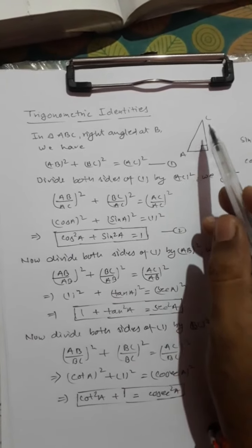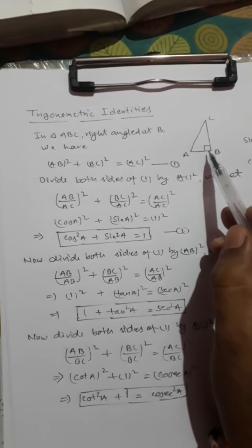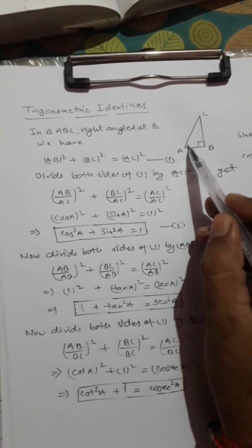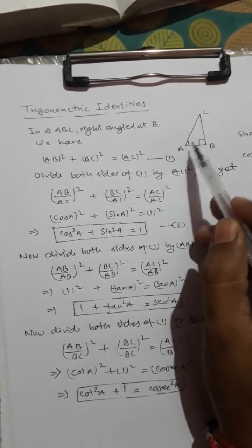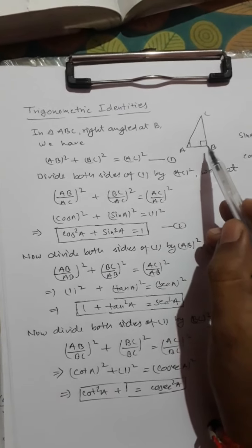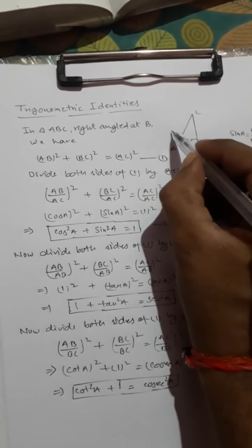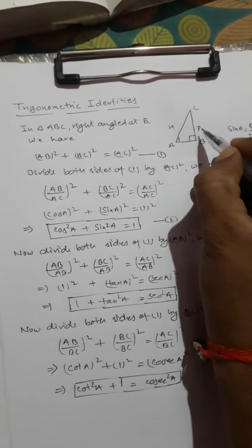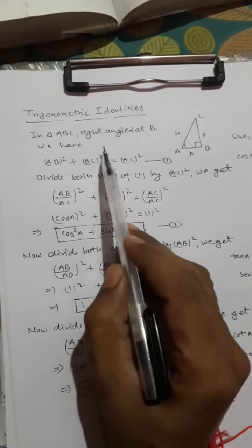First, let us draw a right angle triangle. Triangle ABC is a right angle triangle, right angle at B. We are considering angle A, which we can also call theta — both will be the same. Opposite to angle B is the hypotenuse, that is AC. For angle A, BC is the perpendicular and AB is the base side.